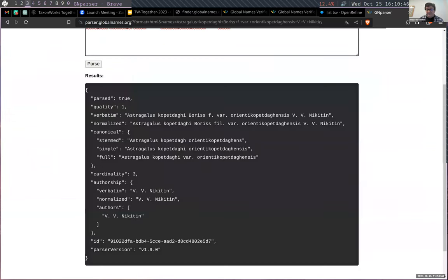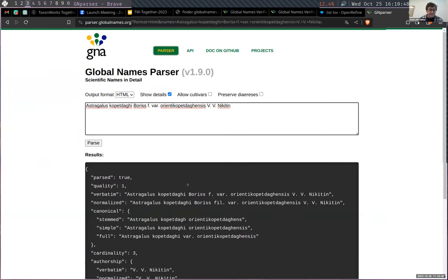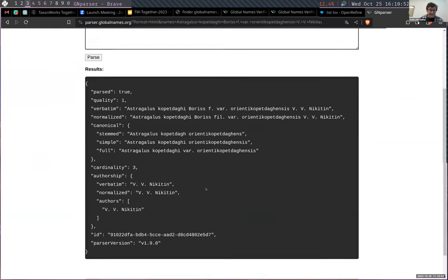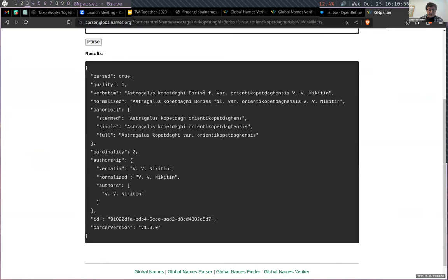Another tool that we have is the parser. Parser allows you to normalize names to understand what is what. Like, for example, this 'ab' is not formal, it is for the author. It allows you to get three types of canonical form, how we call it, named without authorship. So that's all. This is tools that we have. Thank you.